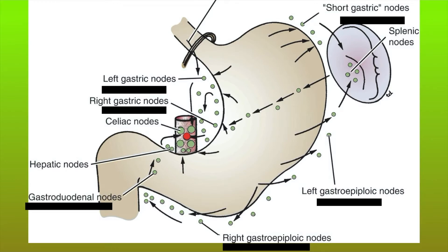The lymphatic drainage. The lesser curvature of the stomach drains into left and right gastric nodes. The fundus drains into short gastric nodes. The greater curvature of the stomach drains into left and right gastroepiploic nodes. The antrum and pylorus drain into gastroduodenal nodes, and all these nodes eventually drain into the celiac nodes.